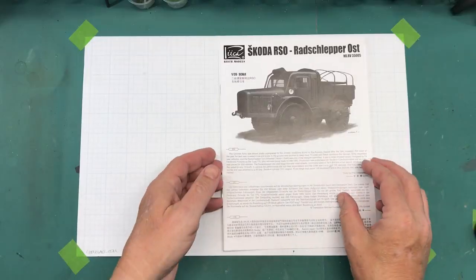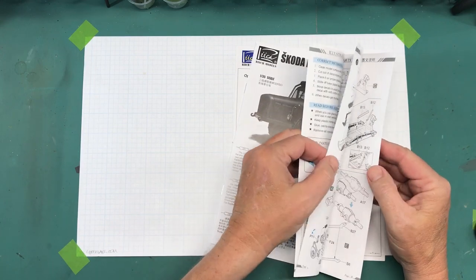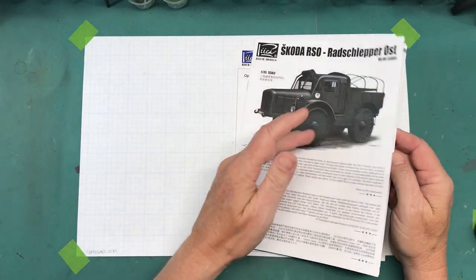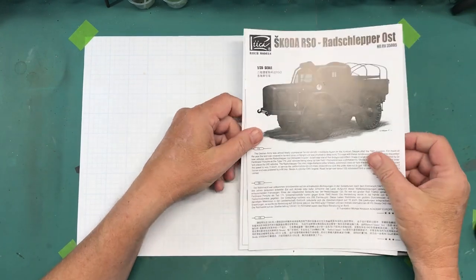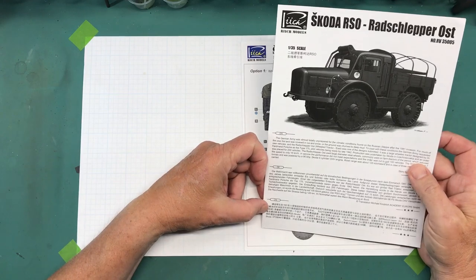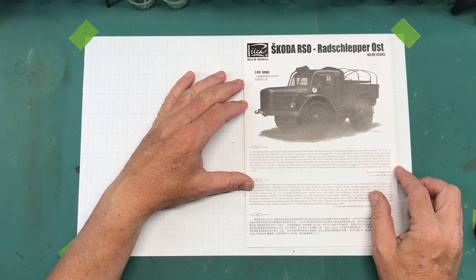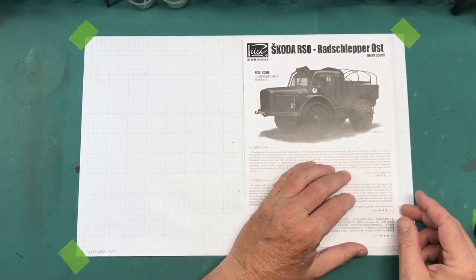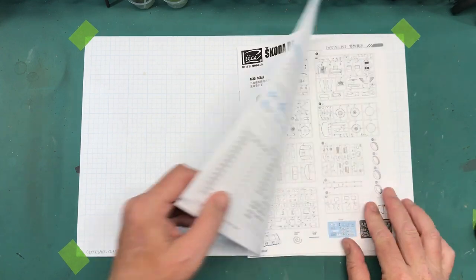First up let's take a look at the instructions. That's some pretty heavy duty paper going on here, light cardstock even. It's booklet type staples. English, German, and Chinese I'm assuming. Information on the vehicle. Nice illustration, same one that's on the box top.